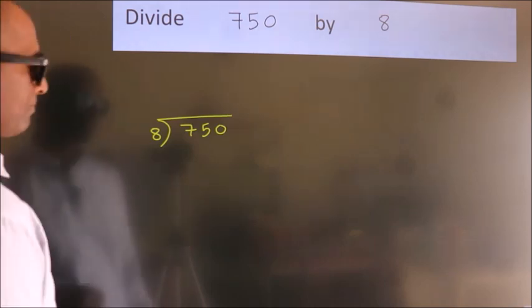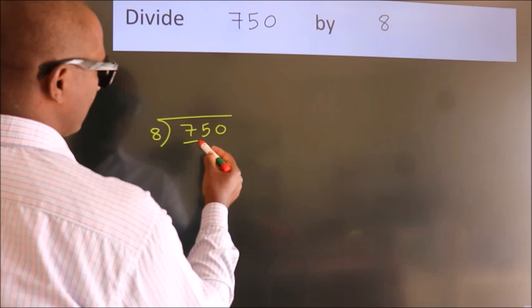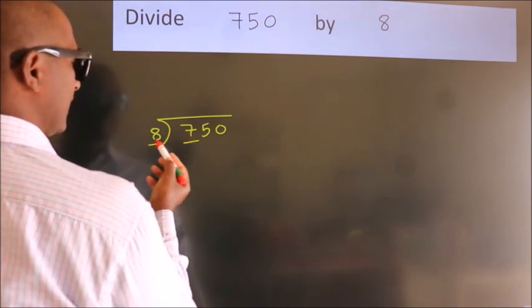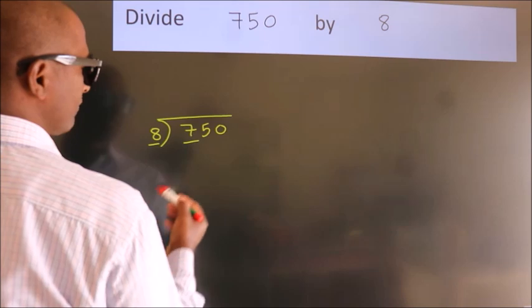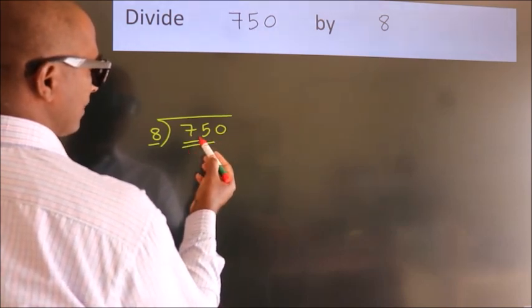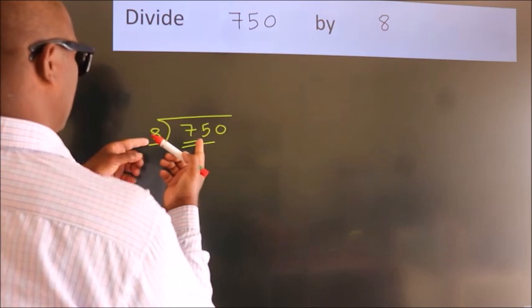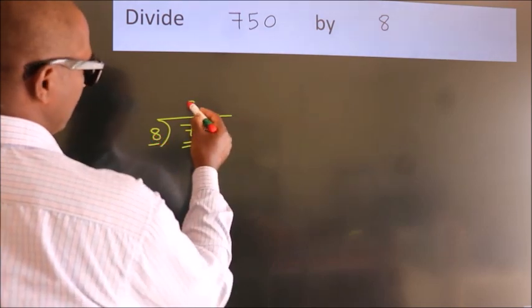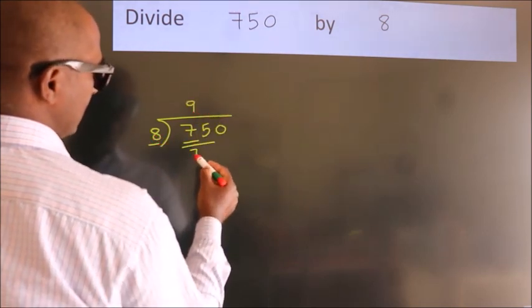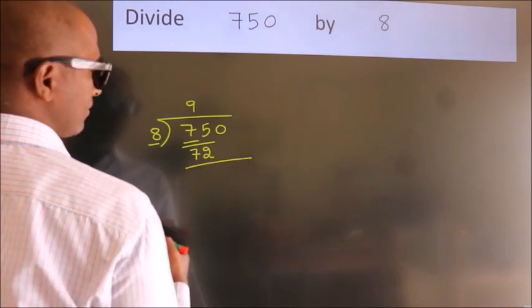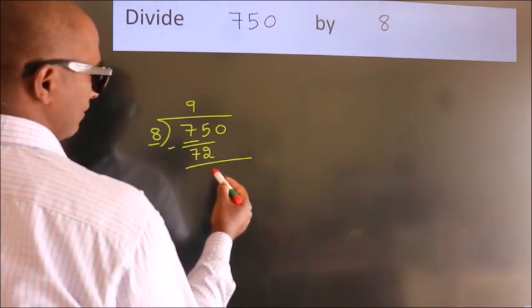Next, here we have 7, here 8. 7 is smaller than 8, so we should take 2 numbers: 75. A number close to 75 in the 8 table is 8 nines, 72. Now we subtract and get 3.